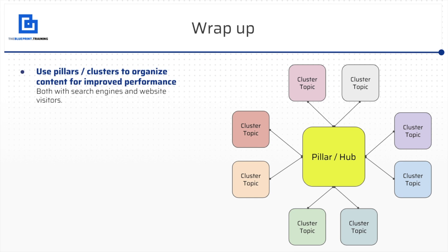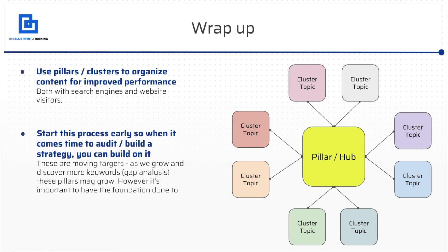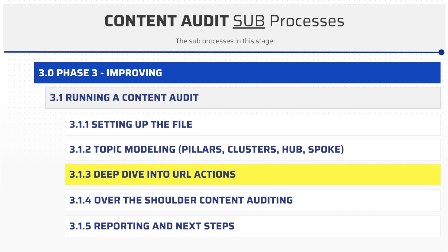So to wrap things up, we want to use pillars and clusters to organize content for improved performance with both search engines and with users to path them through the right way. We want to start this process early, because we want to start thinking about these things as we're thinking about the content on the website. Before we even start thinking about what topics to generate, we want to understand the overall topical targeting strategy — pillars and all the different clusters that come off of them — because ultimately these things are moving targets. As we talk about keyword gap analysis and finding more and more keywords for the website, we're going to be adding more pillars, but we want to have a base and core understanding of how and where we want this website to go. So that was a very long video on topic modeling, but it's incredibly important. In the next video, we're going to be talking about deep diving into the URL actions within the content audit. I'll see you guys there.